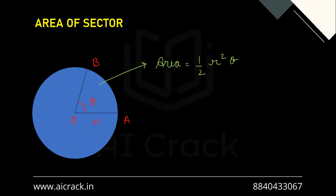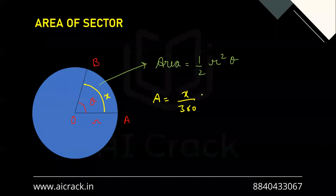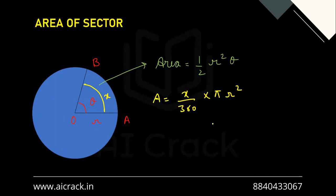Now let's talk about the area of a sector. The area of a sector is directly proportional to the angle it subtends at the center. Using this proportionality, area of a sector equals X divided by 360 times pi·R². We also know that theta equals X times pi divided by 180. Applying this equation, we get area equals one-half R squared theta. That is how it is derived.